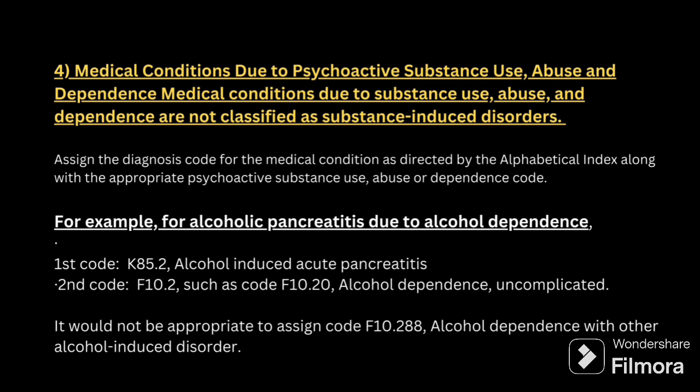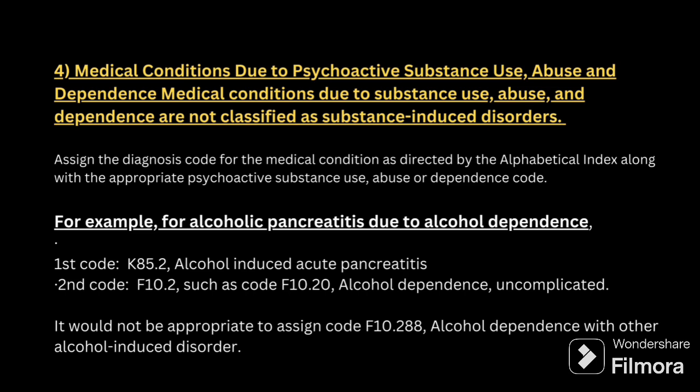Example: Alcoholic pancreatitis due to alcohol dependence. First, code for the alcohol-related pancreatitis; second, code for alcohol dependence. For use, abuse, and dependence, code for the severity. Additionally, if blood alcohol level is checked, code Y90 for blood alcohol level — first the alcohol-related condition, then Y90 as a secondary code.